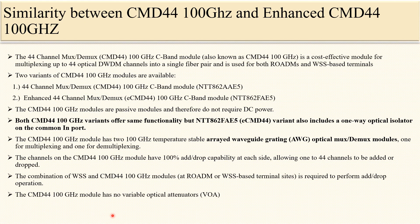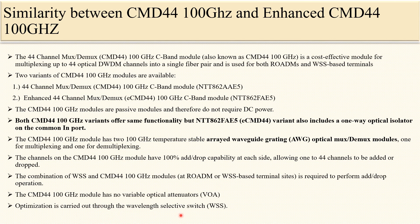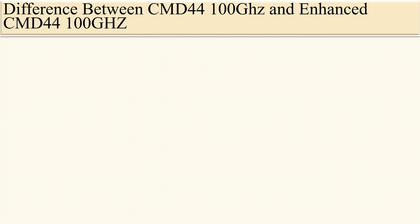The CMD44 100 GHz modules have no variable optical attenuator (VOA), same as the CMD44 and enhanced CMD44 50 GHz variants. No VOA optimization is carried out through the WSS. So if you want to adjust any channel power level, optimize channels, or reset any profile, you need to perform that configuration on the WSS.